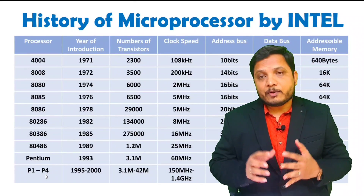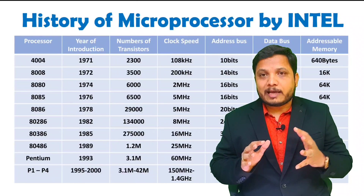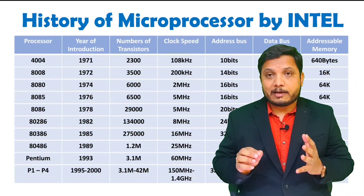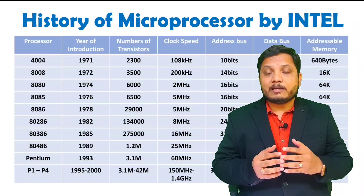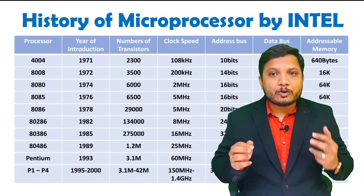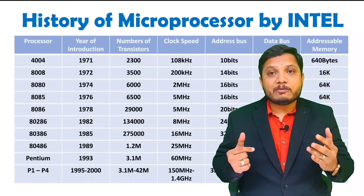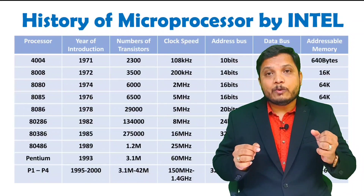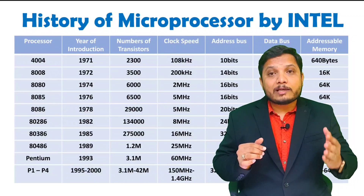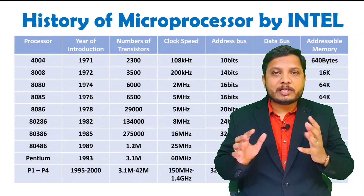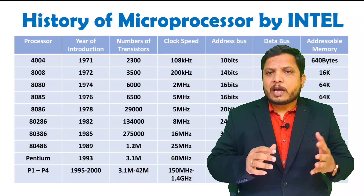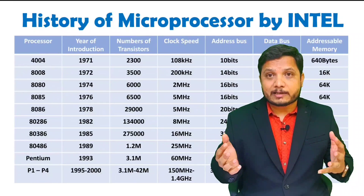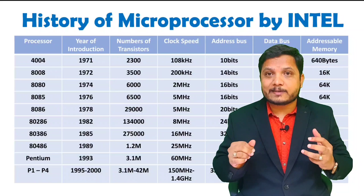My dear students, if you see up to P4, there were 36 bits of address and 64 bits of data. After P4, they initiated with Dual Core and Core 2 Duo, and in 2007 launched Core i3, Core i5, and Core i7. They developed all these processors gradually — it took more than 4 decades, and now in 2022 we can say it has taken 5 decades — 50 years. It is not a short time at all.